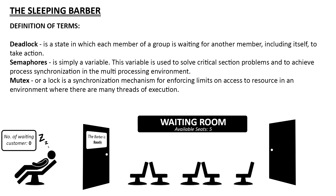Here is a brief definition of terms. Deadlock is a state in which each member of a group is waiting for another member, including itself, to take action. Semaphores is a simple variable used to solve critical section problems and to achieve process synchronization in a multi-process environment. Mutex, or a lock, is a synchronization mechanism for enforcing limits on access to a resource in an environment where there are many threads of execution.